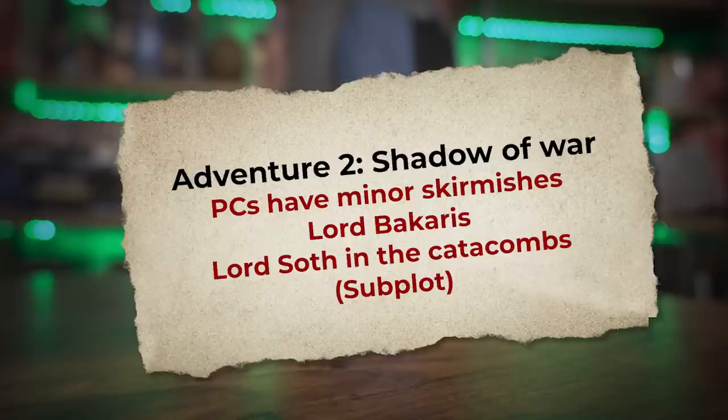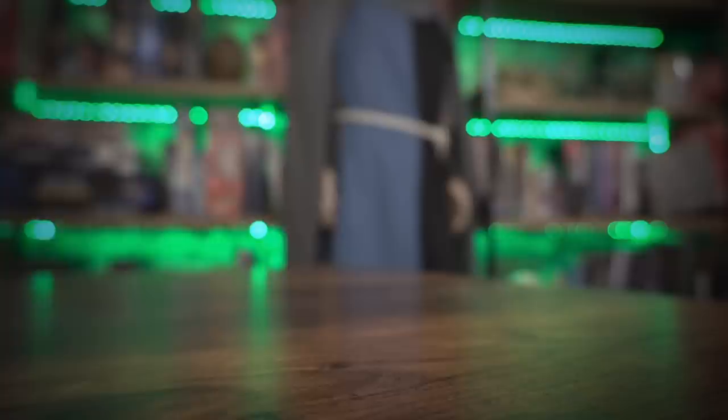Here are the five adventures as presented in the book with a basic summary. Adventure number one, 'When Home Burns': the PCs encounter the dragon invasion and run away from it. Number two, 'Shadow of War': minor skirmishes, and we meet Lord Soth, who is a subplot — theoretically.